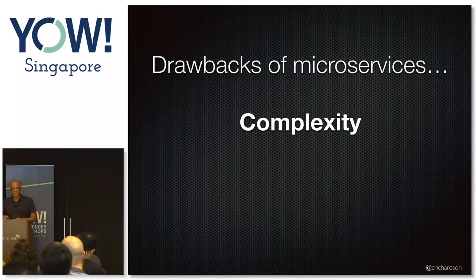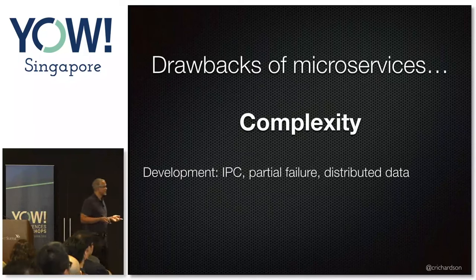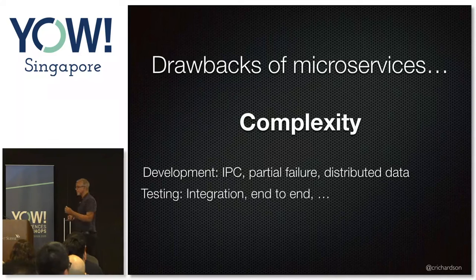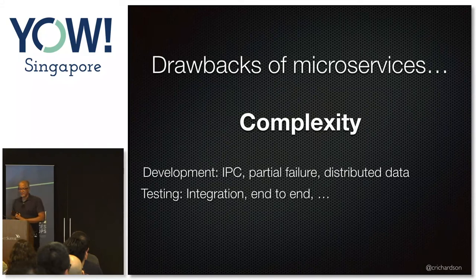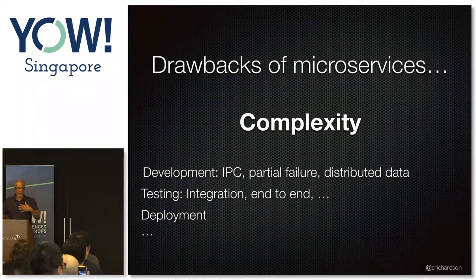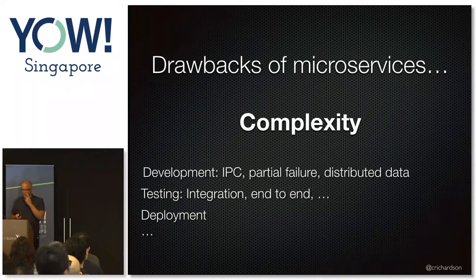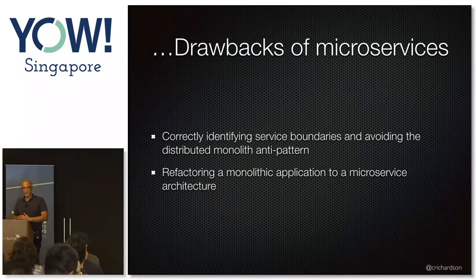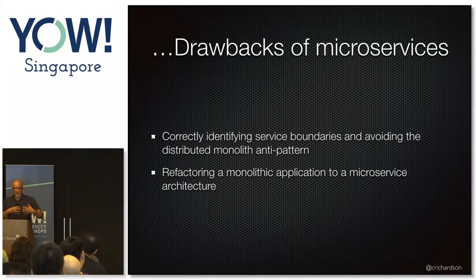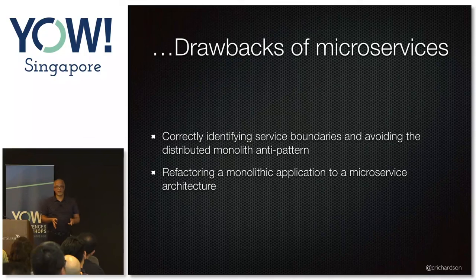In the interest of full disclosure, there are drawbacks. It's a lot more complex — you're building a distributed system, with quite complex development issues. Testing is simultaneously easier and harder. You have an order of magnitude or two more moving parts in production that all need to be monitored, managed, and orchestrated. Defining service boundaries is tricky, and if you get it wrong, it can slow you down rather than make you go faster. And migrating a monolith incrementally into a set of services is extremely time-consuming and painful — but people have done it.